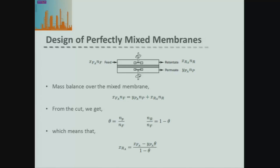For a perfectly mixed membrane, just like every other system, we take a mass balance over our membrane. The amount of component A in the feed equals the amount that comes out in the permeate plus the amount in the retentate. We also have our definition of the cut — the ratio of the permeate flow rate to the feed flow rate — which lets us define one minus the cut as the retentate flow rate fraction. Combining the mass balance with the definition of the cut gives an equation for the retentate concentration in terms of feed concentration, permeate concentration, and the cut.